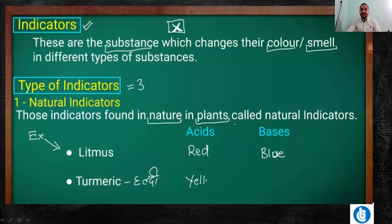So indicators are those substances that change their colour or smell in different types of substances, and by that change we tell that the reaction is complete.